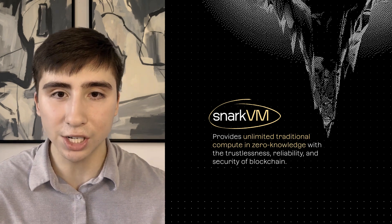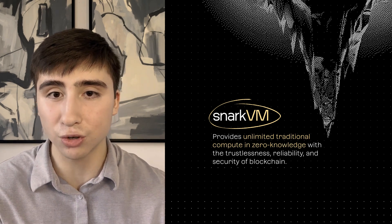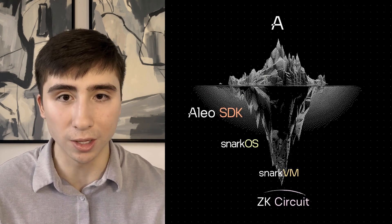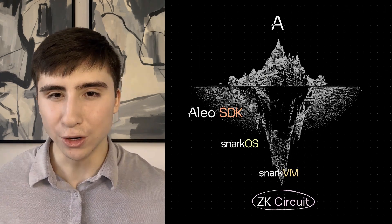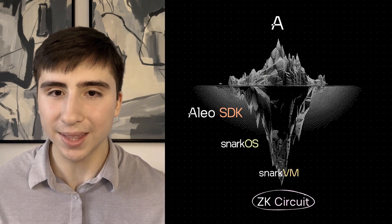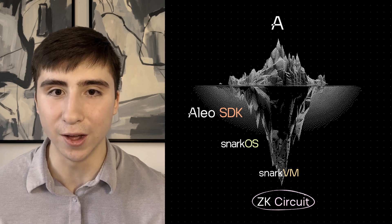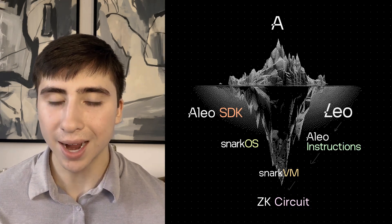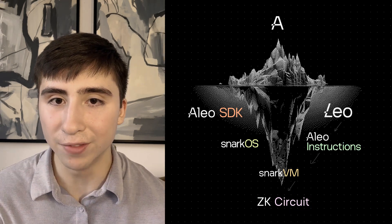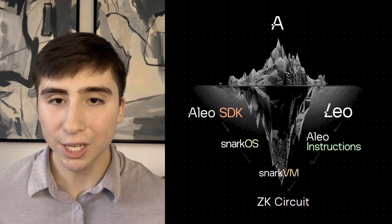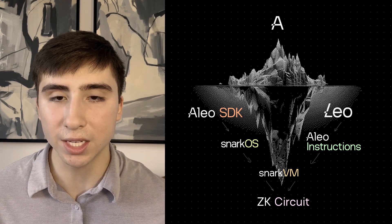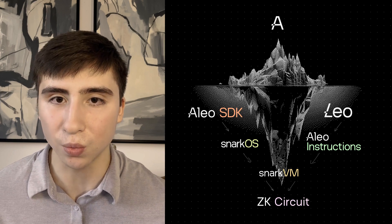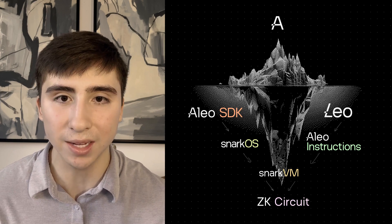In fact, SnarkVM is actually responsible for converting Alio instructions from the higher layers into actual zero-knowledge circuits. In a way, you can think of SnarkVM like the zero-knowledge engine that powers Alio. Now, how do all of these layers tie together? Each layer hides the complexity of the layer below it through abstraction — much like how someone can drive a car using the steering wheel, pedals, and brakes without needing to know how the engine works. The same thing applies here.